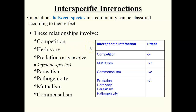Looking at the table, the effect is written on the right. In competition, both species involved have an overall negative effect, so it is negative/negative. In mutualism, both species benefit, so it is positive/positive. In commensalism, one species benefits and the other is neutral — not harmed but also not benefiting. Predation, herbivory, parasitism, and pathogenicity all involve a positive/negative effect, where one species benefits and the other is harmed.